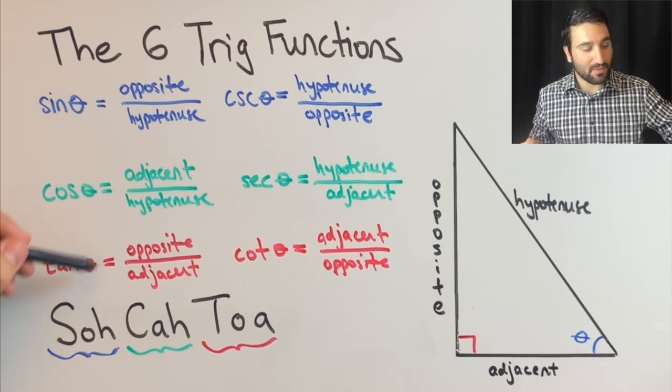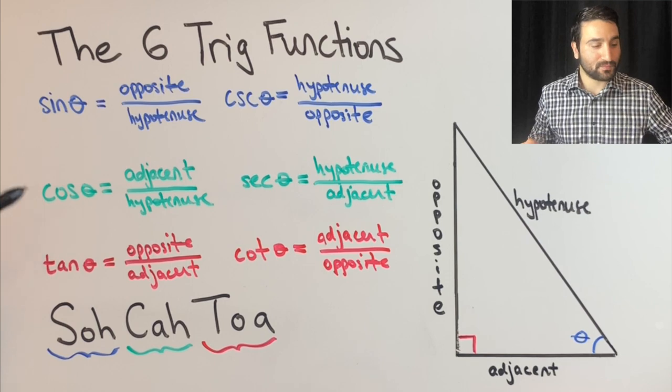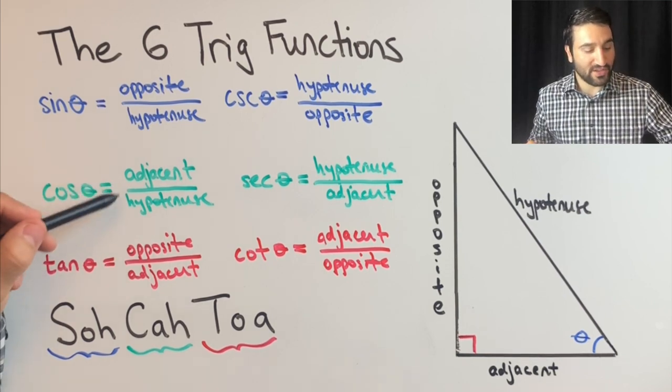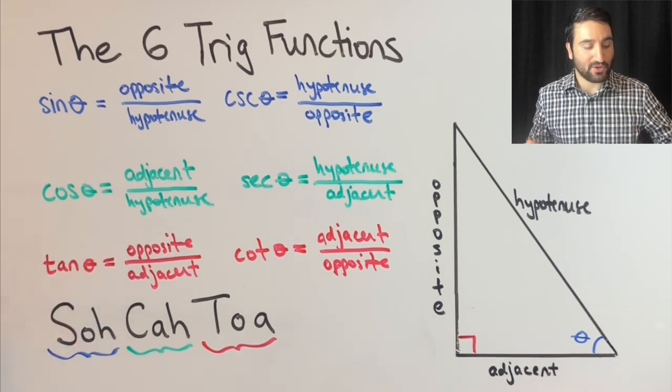So really, you just have to memorize these three, and then these ones will fall into place. So let's take a look at cosine is adjacent over hypotenuse, and tangent theta is equal to opposite over adjacent.